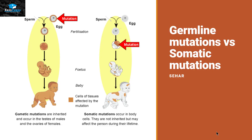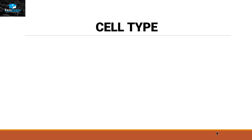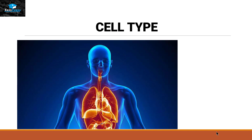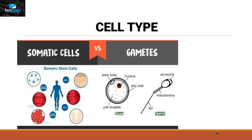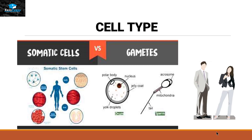Hello everyone, this is Seher from EZPZ. The topic we are going to discuss today is germline mutations versus somatic mutations. These mutations usually depend on the cell type. Inside a human being we have two different types of cells: one type is called somatic cells, which are the same in both male and female, while gametes are different in male and female.